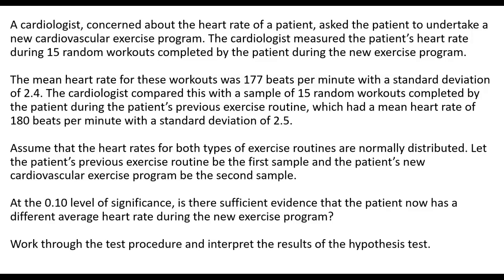Assume that the heart rates for both types of exercise routines are normally distributed. Let the patient's previous exercise routine be the first sample and the patient's new cardiovascular exercise program be the second sample. At the 0.10 level of significance, is there sufficient evidence that the patient now has a different average heart rate during the new exercise program? Work through the test procedure and interpret the results of the hypothesis test.